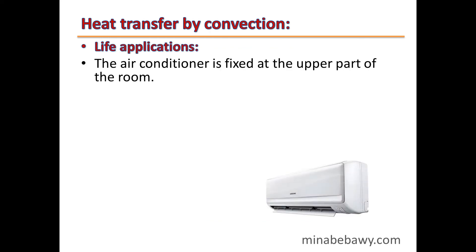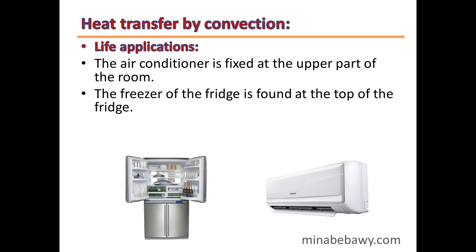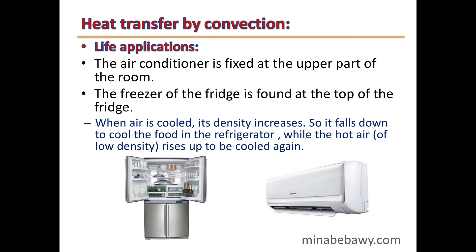Life application: The air conditioner is fixed at the upper part of the room. Also, the freezer of the fridge is found at the top of the fridge. This is because when air is cooled, its density increases, so it falls down to cool the food in the refrigerator, while the hot air of low density rises up to be cooled again.